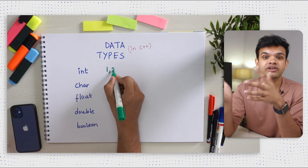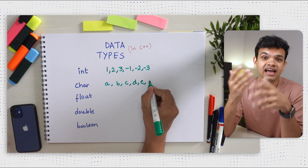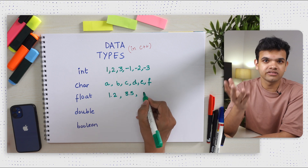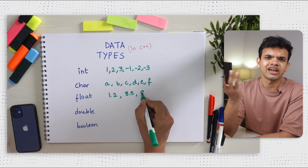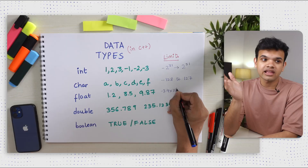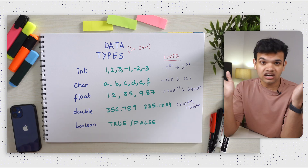Int is for integers like 1, 2, 3, and negative integers like -1, -2, -3. Char is for storing characters like ABC, PQR. Boolean is used to store true or false. Float is used to store floating point numbers — decimal numbers like 1.2, 3.5, 9.8. Double is also used to store decimal point numbers, but double is a lot more precise than float and can store way larger values. The drawback is that it is way slower than float.